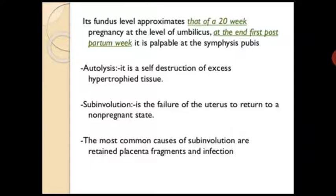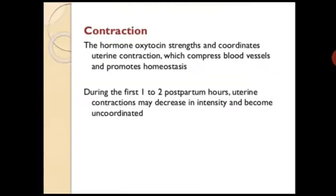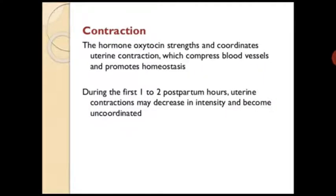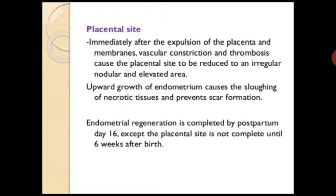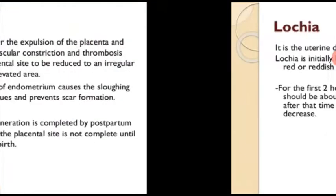The most common causes of sub-involution are retained placental fragments or infection. The hormone oxytocin strengthens and coordinates uterine contractions, which compress blood vessels and promote hemostasis. Exogenous oxytocin is usually administered immediately after expulsion of the placenta to maintain the uterus firm and contracted, and mothers are encouraged to put the baby to breast immediately after birth to stimulate the release of oxytocin. Immediately after expulsion of the placenta, membrane vascular constriction and thrombosis cause the placental site to be reduced to an irregular nodule or elevated area. Upward growth of endometrium causes the sloughing of necrotic tissue and prevents scar formation.